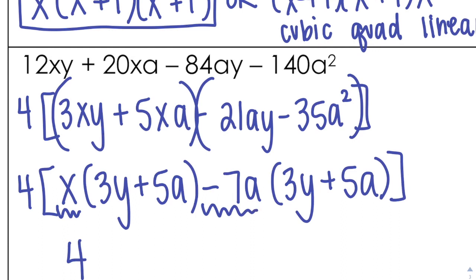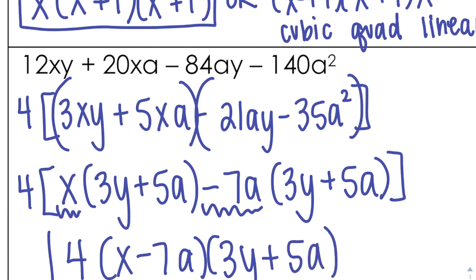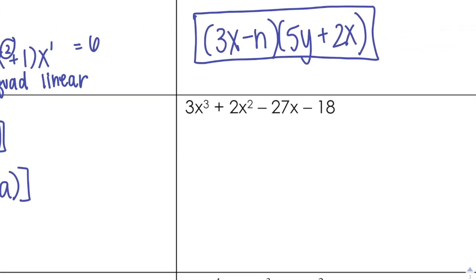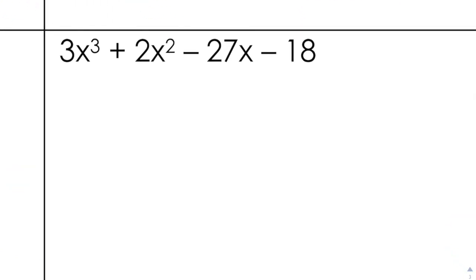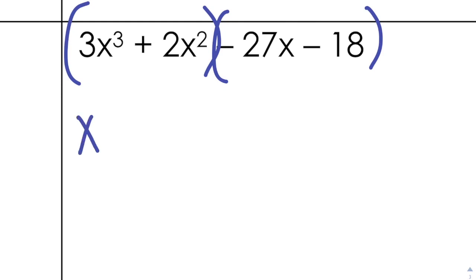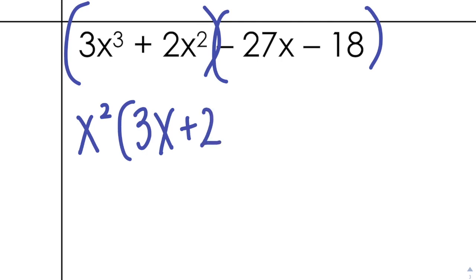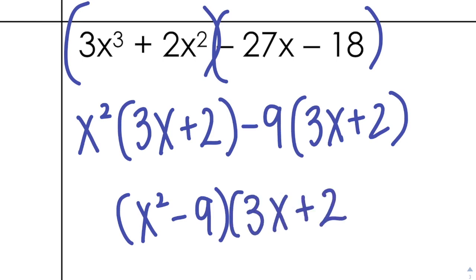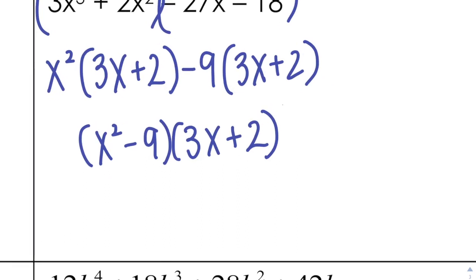Remember, to check go backwards by multiplying. So the factors are: 4 times (x minus 7a) times (3y plus 5a). Now looking at the next problem — 3, 2, 27, 18 — I can't take a 3 out because 2 doesn't have it, and they don't all share an x, so just group it in half. From the first half I take out x squared and I'm left with 3x plus 2; from the second half I take out minus 9 and I'm left with 3x plus 2.